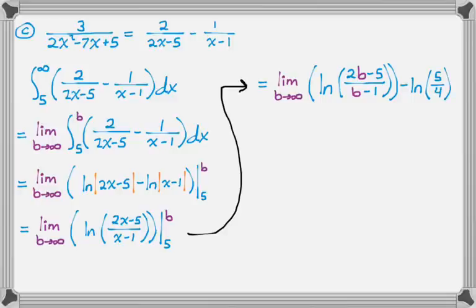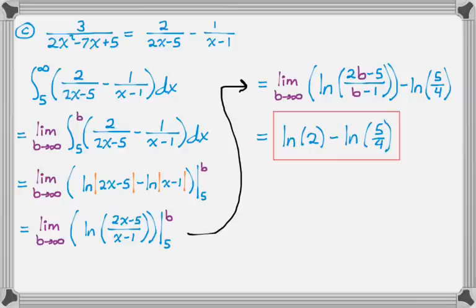If you actually take this limit, you just end up with the natural log of 2, because 2B minus 5 over B minus 1, if B approaches infinity, just gives you 2 over 1, so 2. So this is acceptable, you could totally leave your answer like this. It's natural logs and there's subtraction, so you might choose to turn it into division inside the log. If you do that, you'll look at something like this.